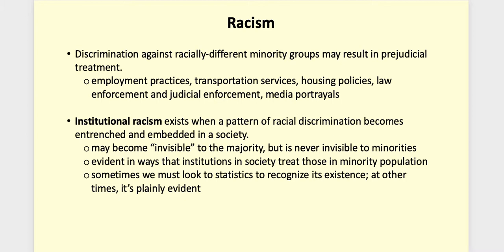The belief that we should be colorblind in our society — that we shouldn't consider race to be important — in effect allows the dominant majority to maintain the status quo. If we say we live in a colorblind society, that means we don't have to change anything. Members of racial minorities will tell you that's really not the case. We need to be aware of race, recognize the handicaps it causes, and correct those handicaps.